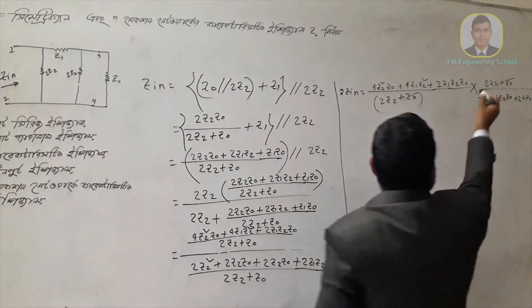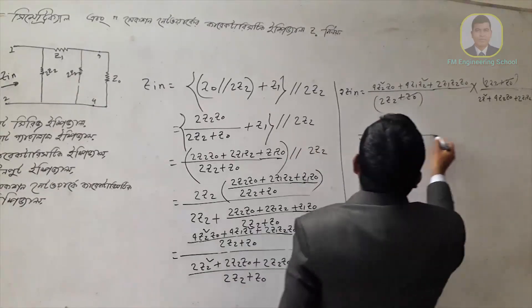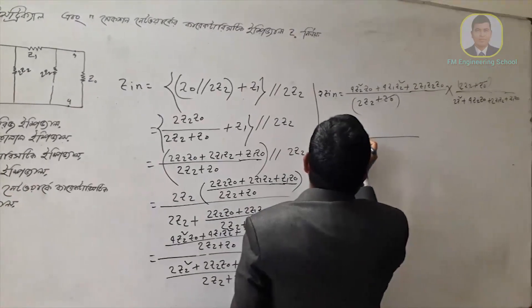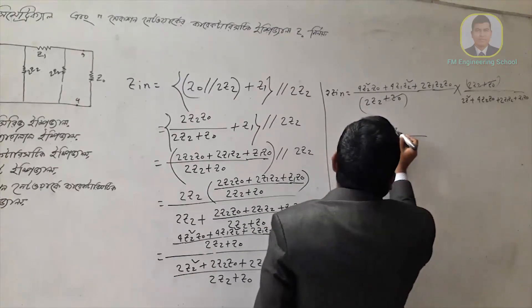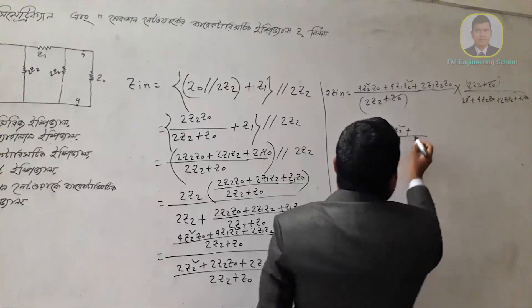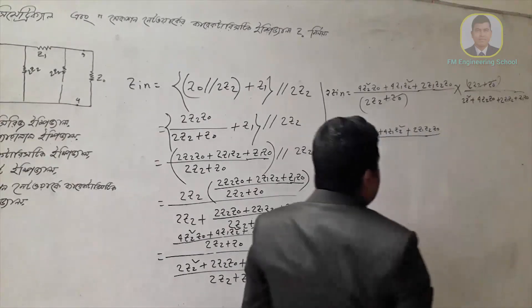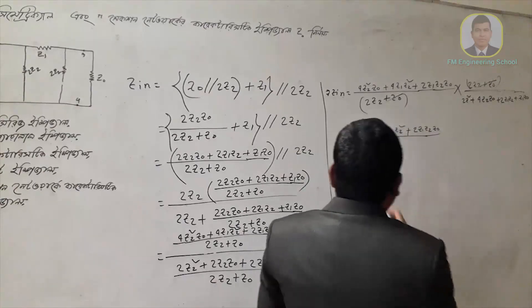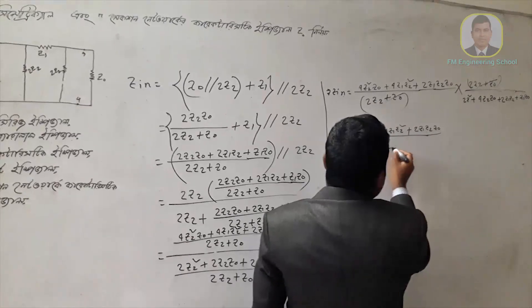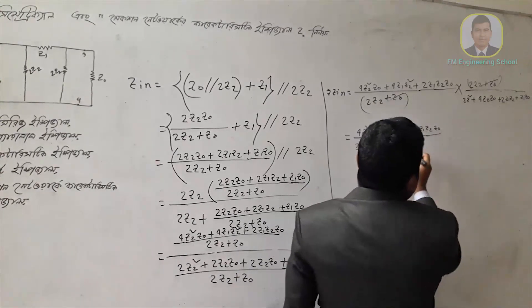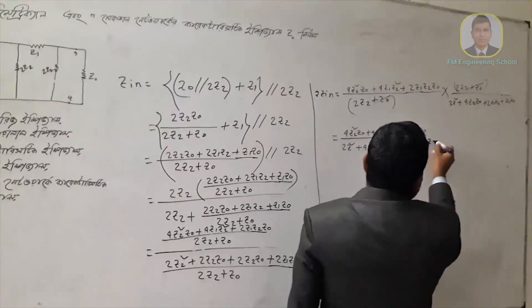So we have to write this. We have to write 4Z2, Z0, plus 4Z1, Z2, plus 2Z1, Z2, Z0. Then 2Z2, Z0, plus 2Z1Z2Z0, plus 2Z1, Z2, Z2 plus Z0.